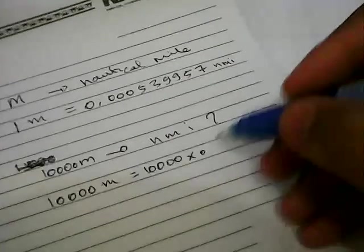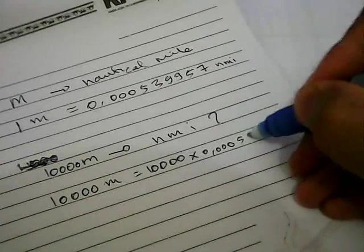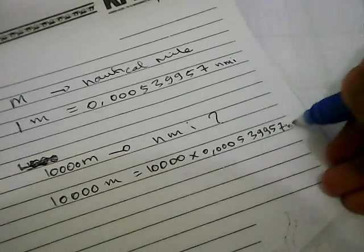Let's write down the numbers. 0.0005, 3, 9, 9, 57, NMI.